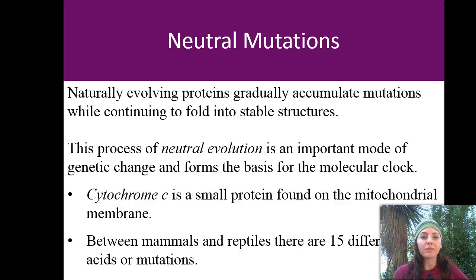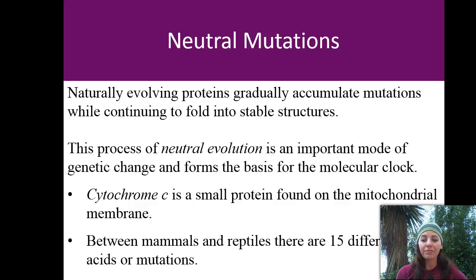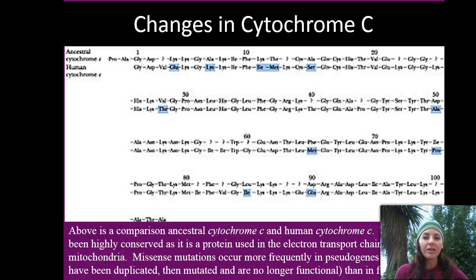Neutral mutations mean essentially nothing harmful happens. Naturally evolving proteins gradually accumulate mutations while continuing to fold into stable, functional structures — they're just naturally changing over time. This process of neutral evolution is an important mode of genetic change and forms the basis of the molecular clock. Cytochrome C is a small protein found on the mitochondrial membrane, and between mammals and reptiles there are 15 different amino acid mutations of cytochrome C.